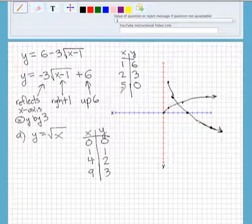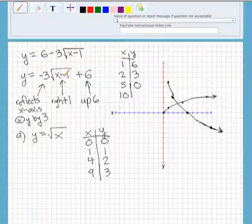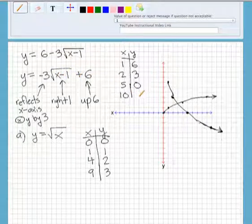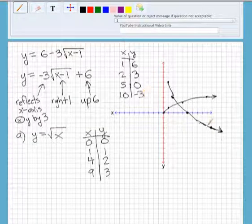And then lastly, we're going to plug in the point 10. 10 minus 1 is 9. Square root of 9 is 3. Times negative 3 is negative 9. Plus 6, which will give us negative 3, which is this last point right here.